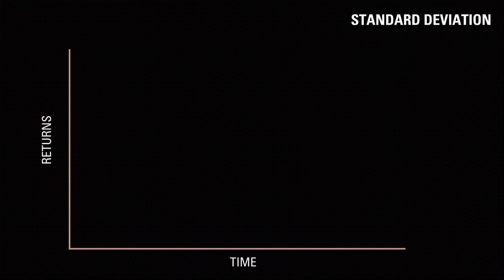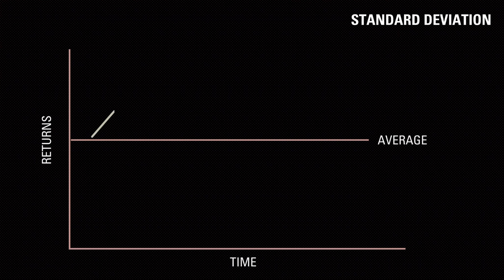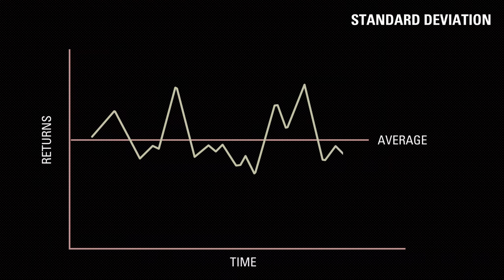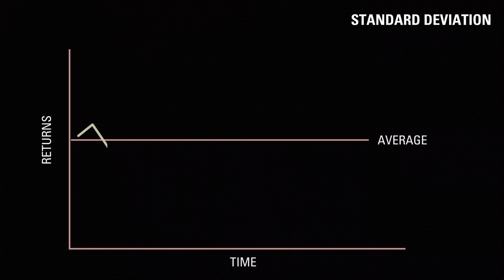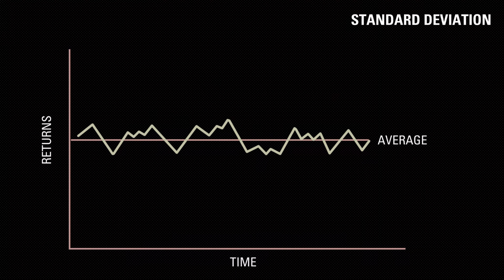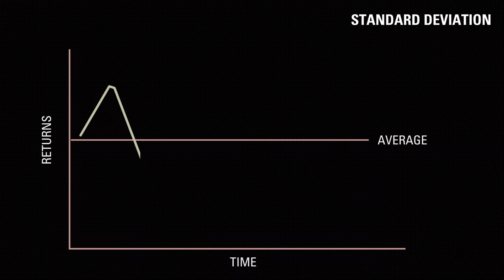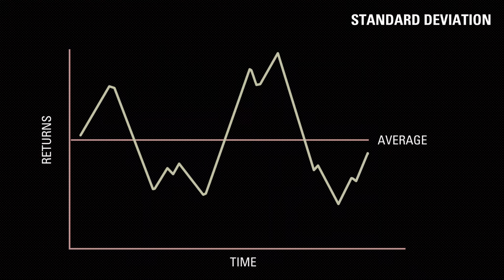Now, coming to standard deviation — in simple terms, standard deviation represents the volatility of your investment. It tells us the deviation of investment returns from the average return. If you take a mutual fund and calculate its return over the past 15 years, the return won't be stable, especially for an equity mutual fund, so there would be lots of ups and downs. A low standard deviation means most of the time returns were much closer to the average, while a high standard deviation means the returns were far away from the average — more spread out.